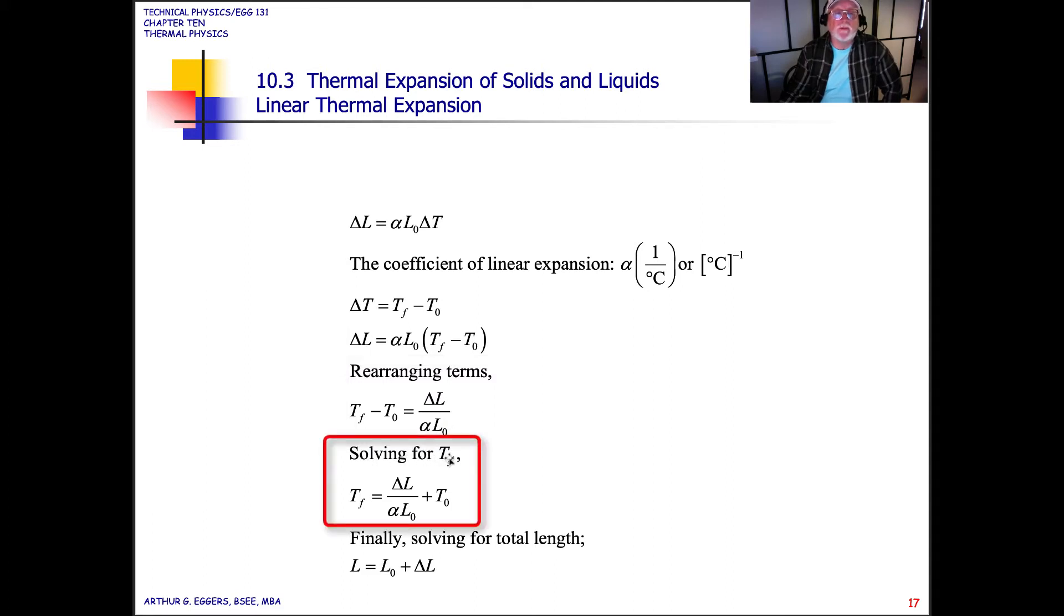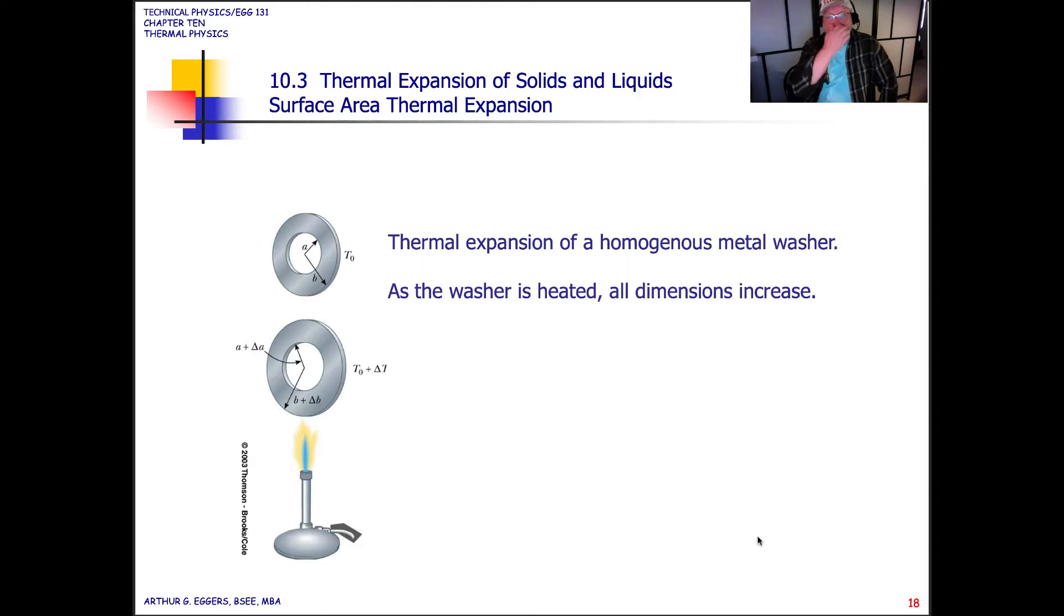And so now at this point, if we're solving for the temperature final, we would have temperature final equal to the ratio of the change versus the original times the coefficient plus the original length. So finally then, we can solve for the total length by saying that the length is equal to L initial plus the change in the length for the material.